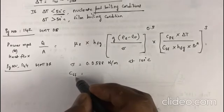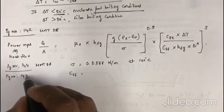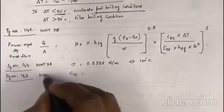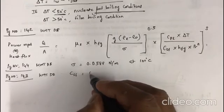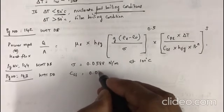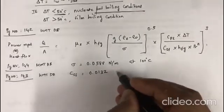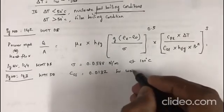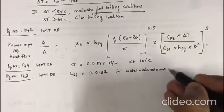And here you will see there is another term which is Csf. This value is for the material of the pan, which is aluminum. We have to look into page number 143 of the HMT data book for the Csf value. It is estimated to be 0.0132 for aluminum-water interaction.